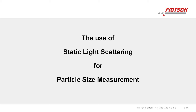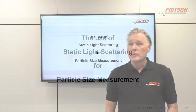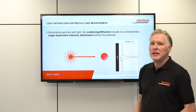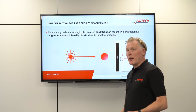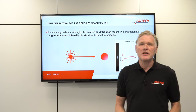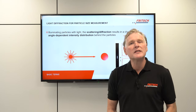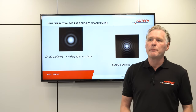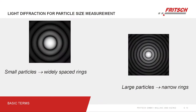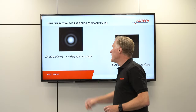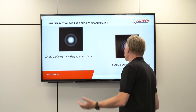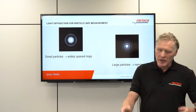Now let's talk about the theory behind laser diffraction, also called static light scattering. We illuminate a particle typically with a laser light and observe an intensity distribution, from which we then calculate the particle size. Typically small particles generate large scattering angles while large particles create small scattering angles. This means small particles give wide diffraction rings while large particles give narrow diffraction rings.